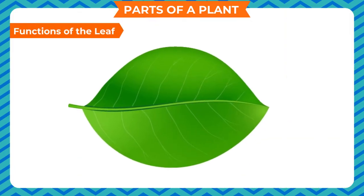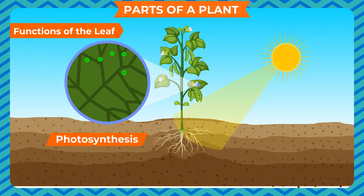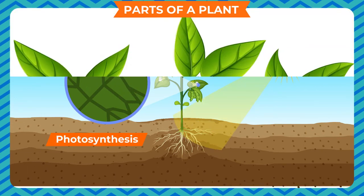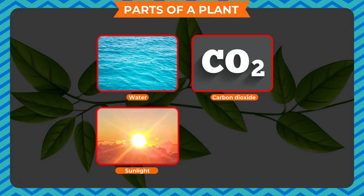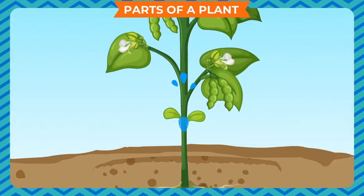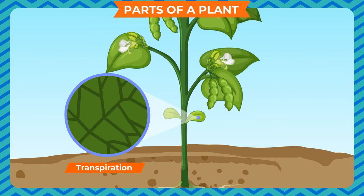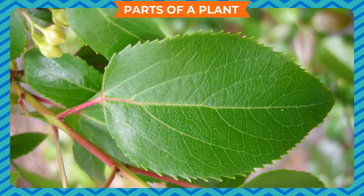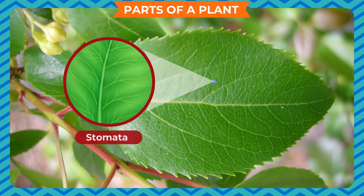The plant body gets food prepared by leaves through a process called photosynthesis. For making food, leaves require water, carbon dioxide, sunlight, and chlorophyll — a green pigment present in the leaves. The excess water from the plant is released through stomata in the leaves — this is called transpiration. Through these pores, plants also take in gases for respiration and photosynthesis, and the gases produced during these processes are given out through the stomata.